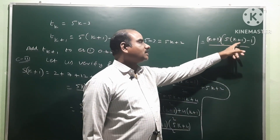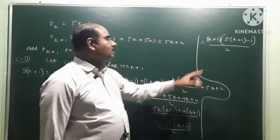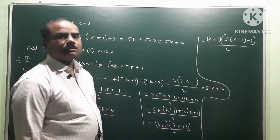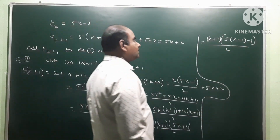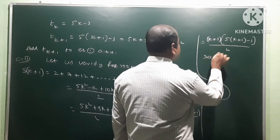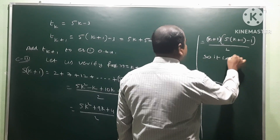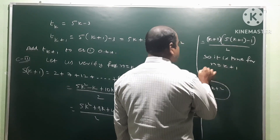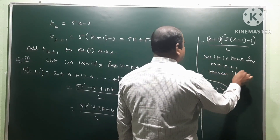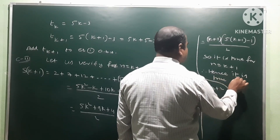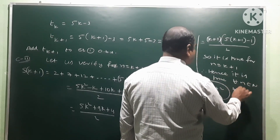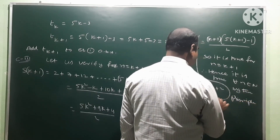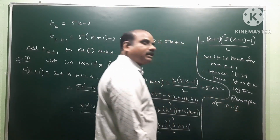Taking 5k common from the first two terms and 4 from the last two, we factor to get k plus 1 into (5k plus 4) by 2. This equals n into (k plus 1) with 5 into (k plus 1) minus 1, by 2 — which matches the required form for n equal to k plus 1. Therefore it is true for n equal to k plus 1. Hence it is true for all n belonging to N by the principle of mathematical induction.